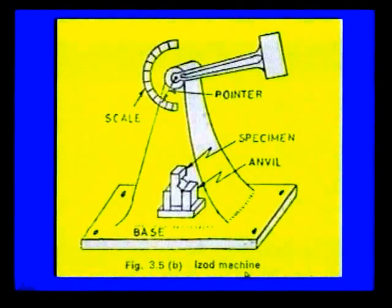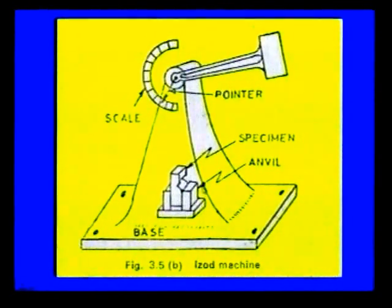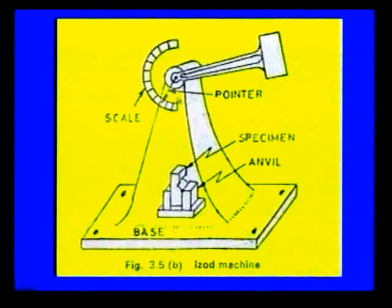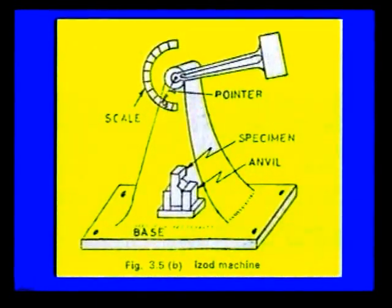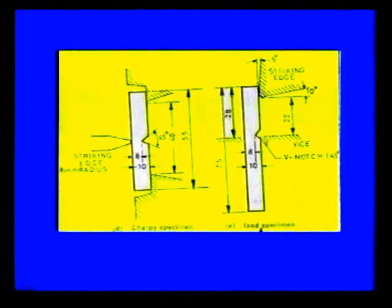The next test is the Izod machine. In this case, the specimen is fixed vertically on the base anvil (whereas in the Charpy test it is fixed horizontally) and the pendulum is raised vertically upward. When the pendulum is released, it strikes the work piece at the notched portion, damaging it, and the pendulum swings forward. The forward motion is indicated on the scale by the pointer. The distance from the top to the notch is 22 mm, and the striking edge is applied at an angle of 10 degrees with the horizontal and 5 degrees with the vertical, so it damages the work piece at the notched portion only. The notch angle for both Charpy and Izod tests is 45 degrees.